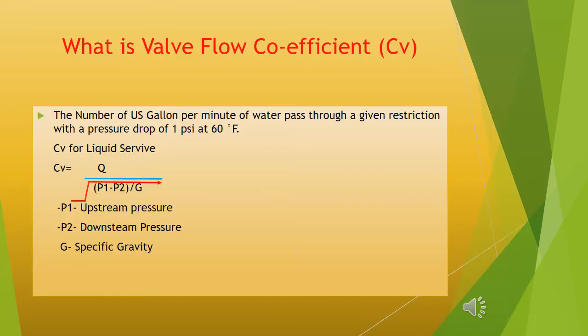What is valve flow coefficient? CV is the number of US gallons per minute of water passed through a given restriction with a pressure drop of 1 pound per square inch at 60 degrees Fahrenheit. Valve coefficient is directly proportional to flow and inversely proportional to the square root of delta pressure.